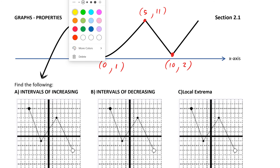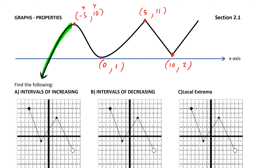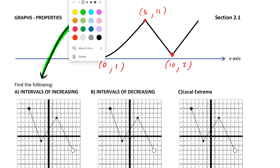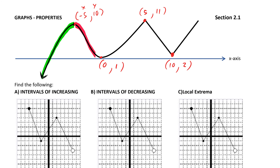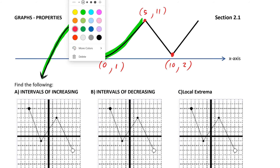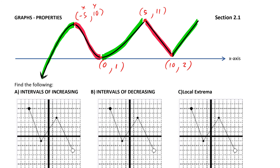Our graph is increasing here, and then it decreases from here to there. When you look at each graph, you always want to start from the left and work your way through the entire graph — increasing and then decreasing. The reason we go from the left is that's how our numbers work. Our numbers start over here at negative infinity and then move all along the axis until we get to infinity. So we always start from the left and work our way to the right.